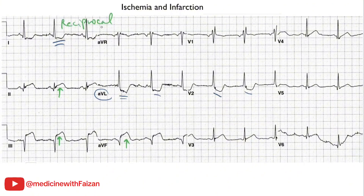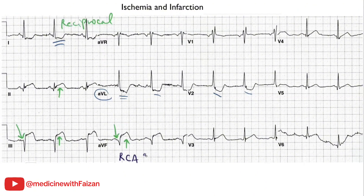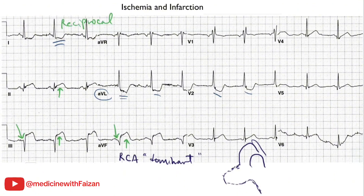This is an acute inferior wall MI, and it has probably been going on for some time because the patient has already lost R waves — there are already Q waves in the inferior leads indicating no activity in that region. The coronary artery affecting the inferior wall is most often the right coronary artery. In about 80% of patients the right coronary artery is dominant — it comes off the aorta, runs around the right AV groove, reaches the back of the heart, and becomes the posterior descending. So whenever you see an inferior infarction, you have to wonder if the posterior wall is affected as well.